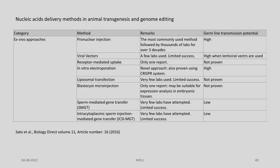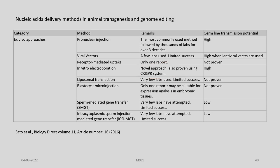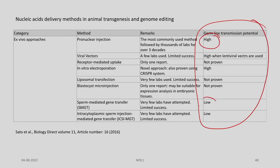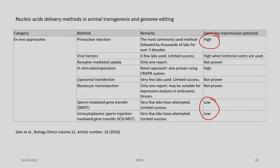Pro-nuclear injection is the most commonly used method, followed by thousands of labs for over three decades. Viral vectors are used by few because of limited success. Receptor-mediated uptake had only one source report at the time of compilation. Electroporation was reported as a novel approach and has also been proven using the CRISPR-Cas system. Germline transmission potential varies — very high in certain cases, very low in others, and in some cases proof is yet to come.